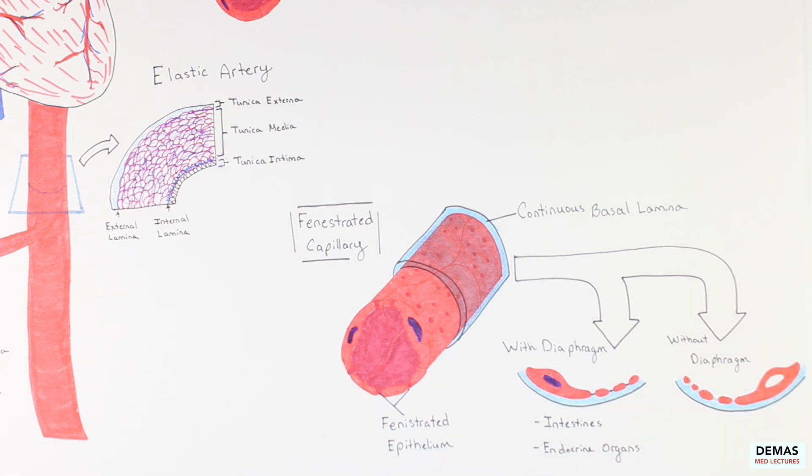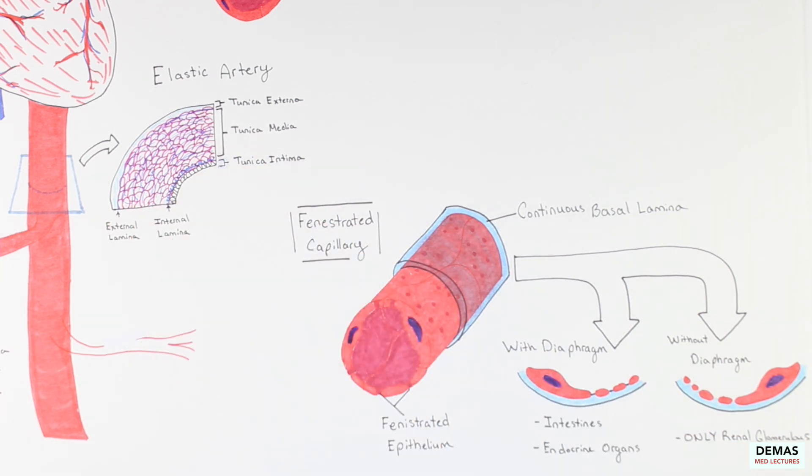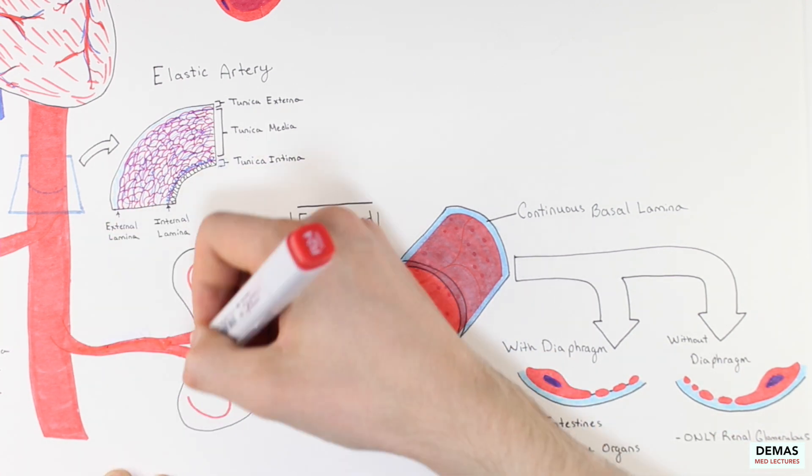Fenestrated capillaries with diaphragms can be found in the intestines and in endocrine organs, while fenestrated capillaries without diaphragms are only found in the renal glomerulus. I have drawn in a kidney here to remind you of this important connection.